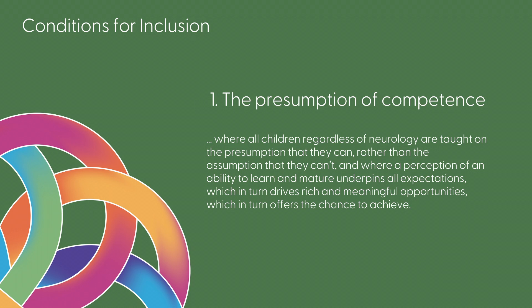One: the presumption of competence, where all children, regardless of neurology, are taught on the presumption that they can, rather than the assumption that they can't, and where a perception of an ability to learn and mature underpins all expectation, which in turn drives rich and meaningful opportunities, which in turn offers the chance to achieve.